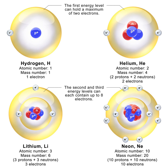Within the nucleus, protons and neutrons are bound together through the nuclear force. Neutrons are required for the stability of nuclei, with the exception of the single-proton hydrogen atom. Neutrons are produced copiously in nuclear fission and fusion. They are a primary contributor to the nucleosynthesis of chemical elements within stars through fission, fusion, and neutron capture processes.